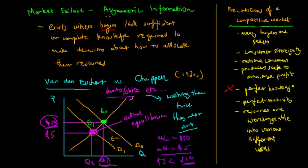This is an example of asymmetric information where buyers lack sufficient or complete knowledge required to make rational decisions about how to allocate their resources so that living standards are maximized and opportunity cost is minimized. That is what asymmetric information is all about.